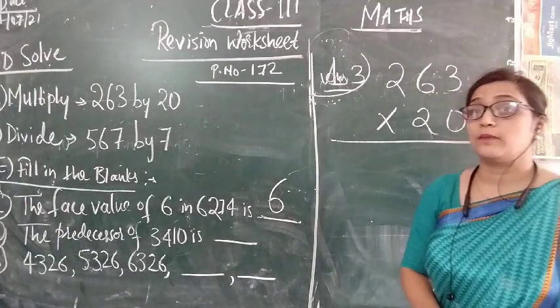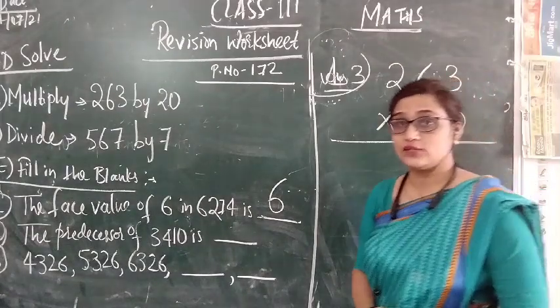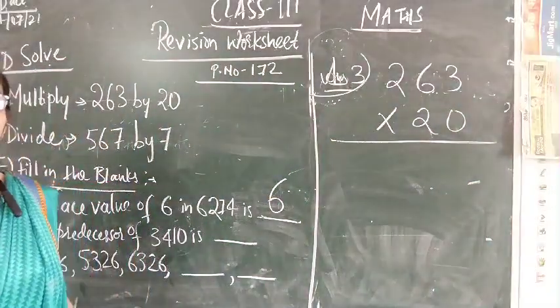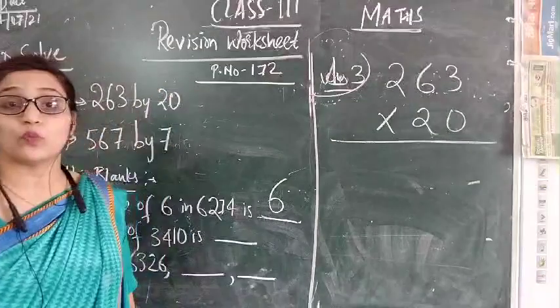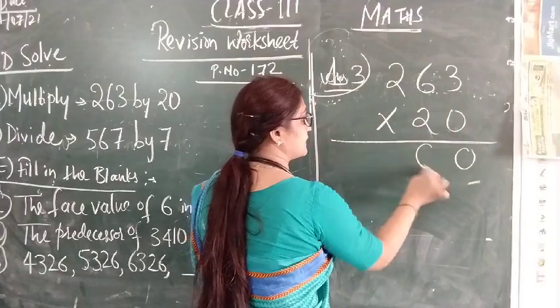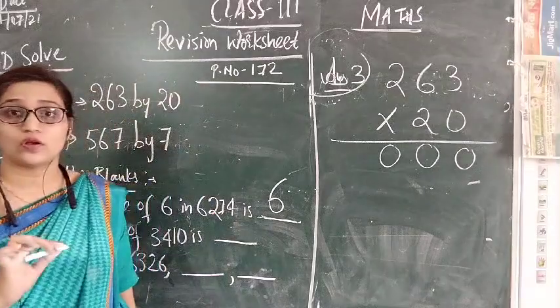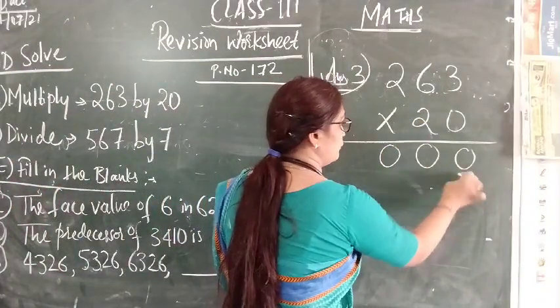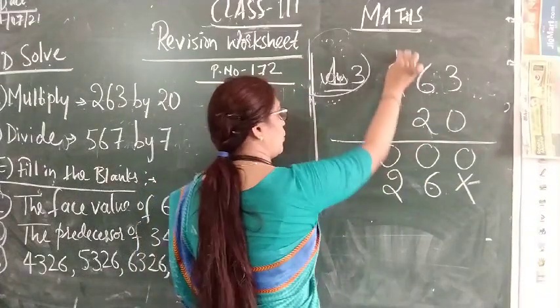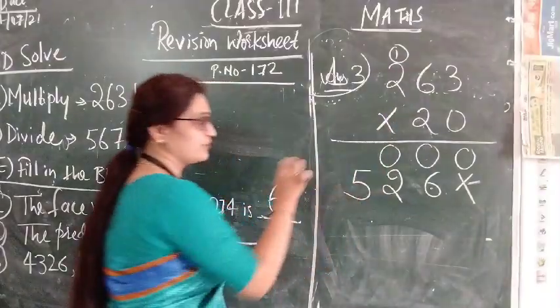The third question is multiply 263 by 20. So let us solve 263 multiply by 20. Let us start from ones place. 0 into 3 is 0, 0 into 6 is 0, 0 into 2 is 0. Then tens place is 2. 2 into 3 is 6, 2 into 6 is 12, write 2 and 1 carry. 2 into 2 is 4 plus 1 is 5.